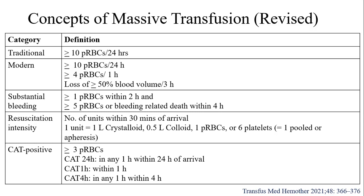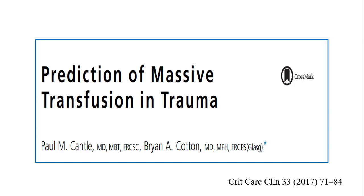Critical administration threshold is more than 3 packed red blood cells. CAT at 24 hours must happen within any 1 hour of the 24 hours of arrival; CAT at 1 hour is within the first hour of arrival, and CAT at 4 hours is within 1 hour after 4 hours of arrival in the ED or ICU. Anticipation is the name of the game when resuscitating this patient, particularly to prevent early deaths, as there is hypoperfusion and secondary traumatic brain injury if you delay resuscitation.